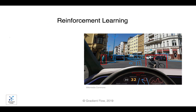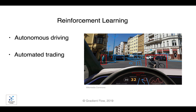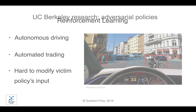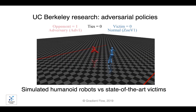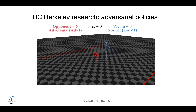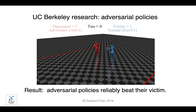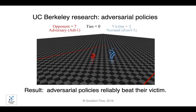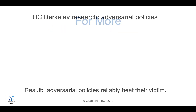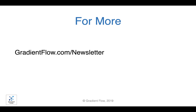Reinforcement learning has been applied to autonomous driving and automated trading, domains where it would be hard for an attacker to directly modify the victim policy's input. A UC Berkeley research project explored adversarial policies with simulated humanoid robots against victims trained to be robust to opponents. The project demonstrated adversarial policies that reliably beat their victim, and the attacks were more successful in high-dimensional environments. See Gradient Flow newsletter No. 11 for more.